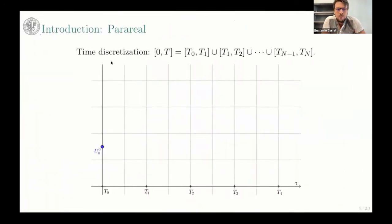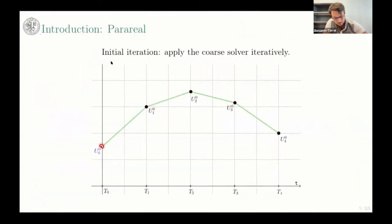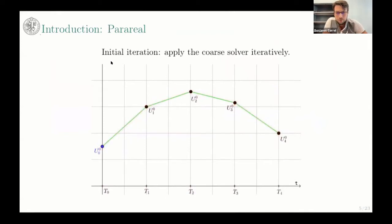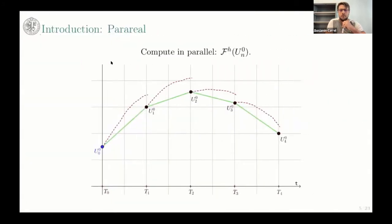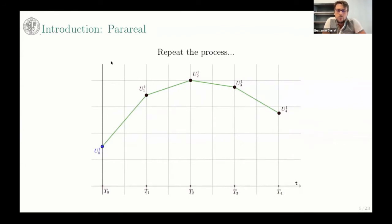Here is a visualization of the algorithm. First you discretize your time: t0, t1, t2, t3, t4. You start from your initial value and compute iteratively using the coarse solver. Now you have an initial guess of your solution and you can use the fine solver in parallel from each time point. Then you use the coarse solver iteratively again to propagate the solution over time, obtaining a more precise solution, and repeat the process. That's Parareal.